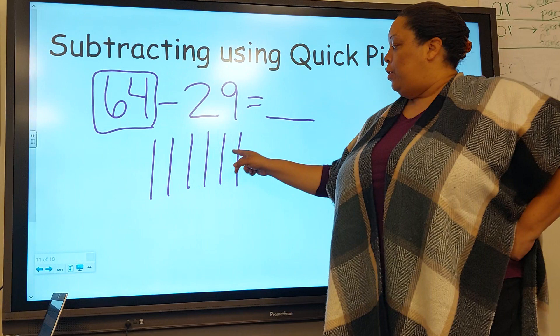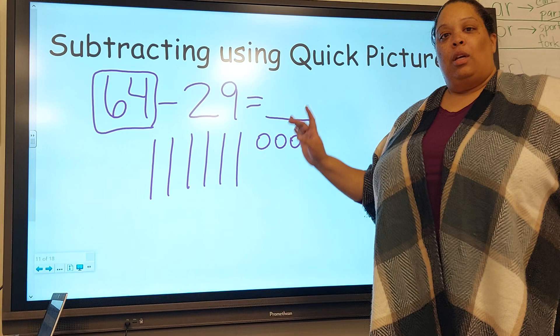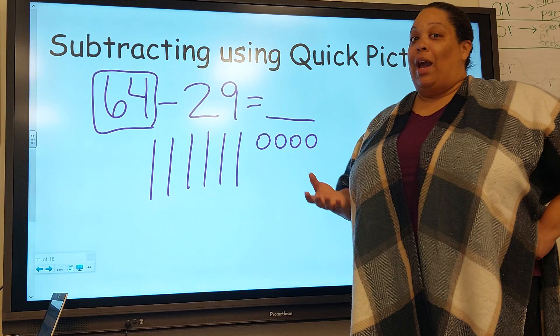That's going to be a stick for each 10. So that's 10, 20, 30, 40, 50, 60, and a circle for each one. That's four ones we have. Now I always ask, when we add and subtract, where do we start at?